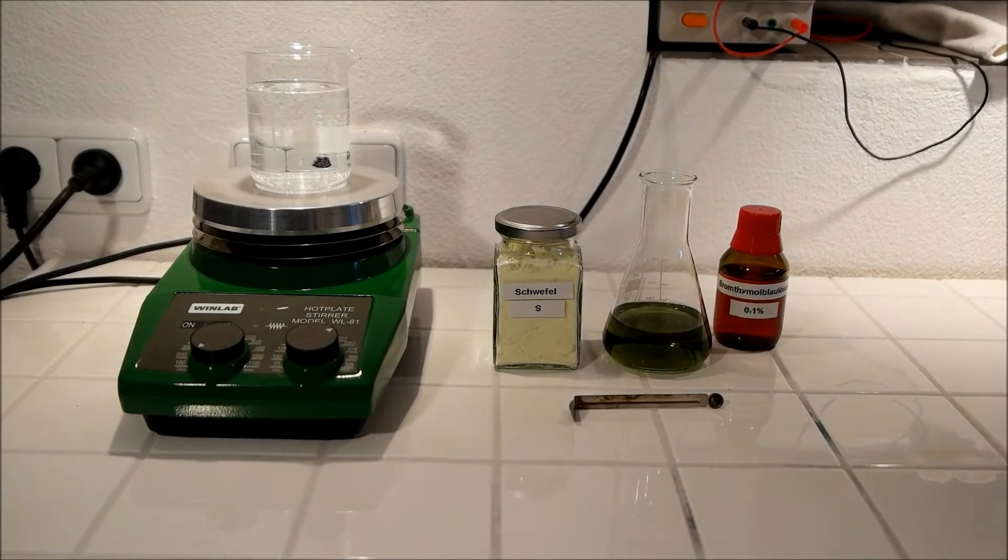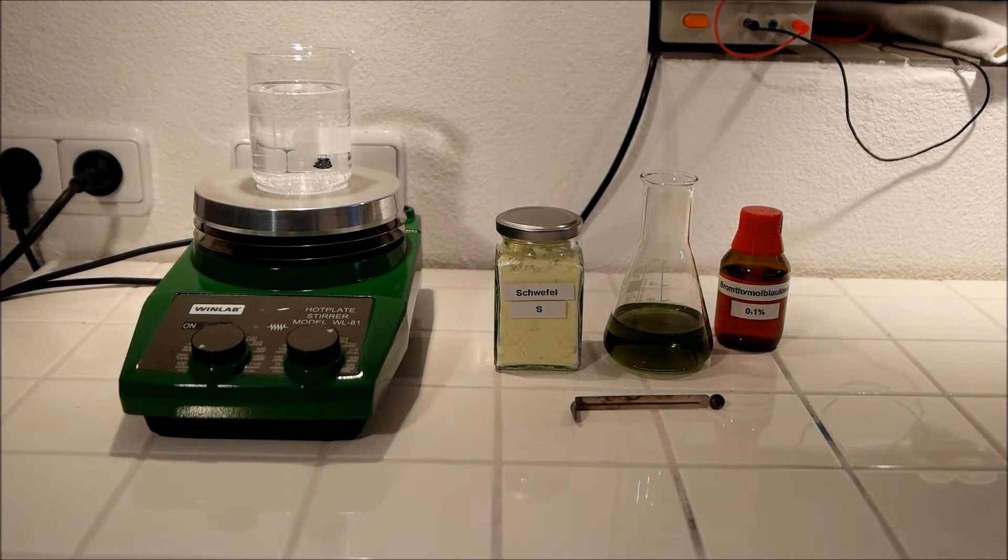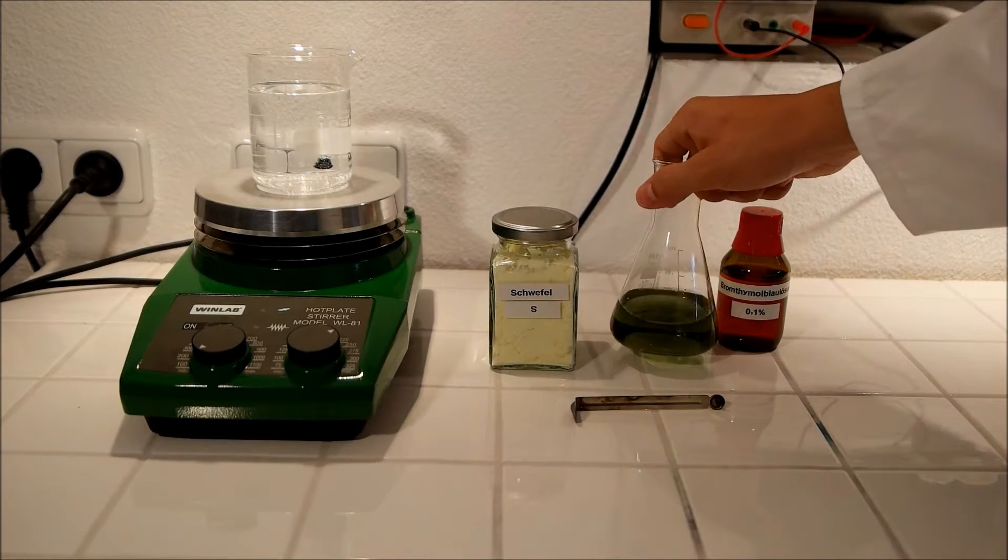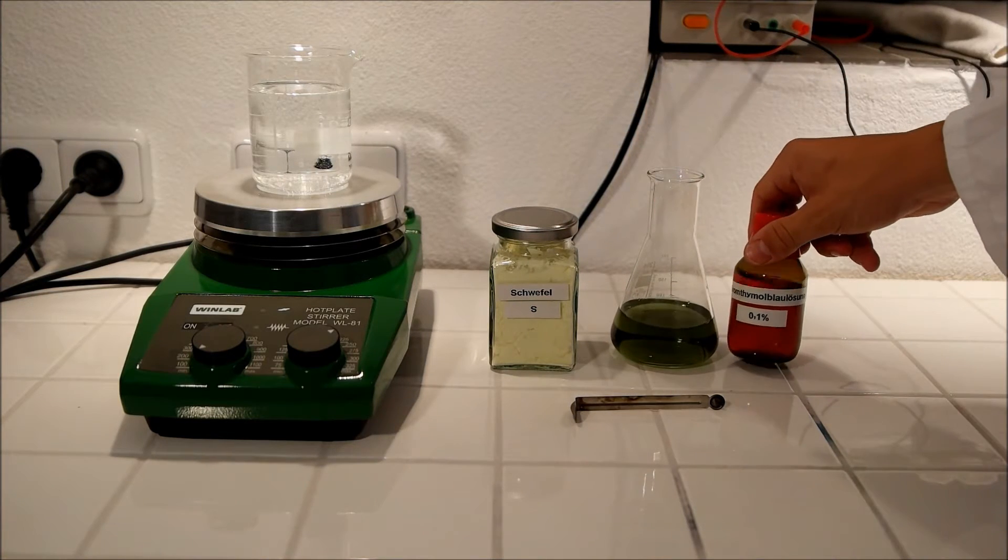Today we're going to make sulfurous acid. For this you need sulfur of course, an Erlenmeyer flask with a few drops of bromothymol blue solution,